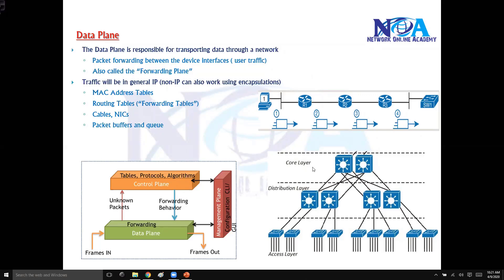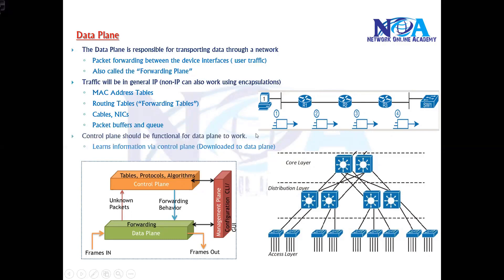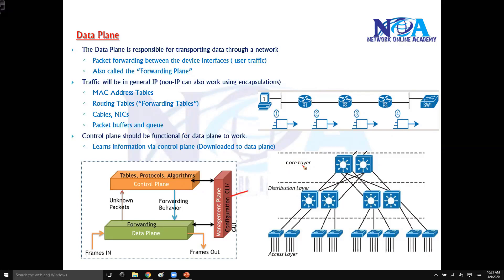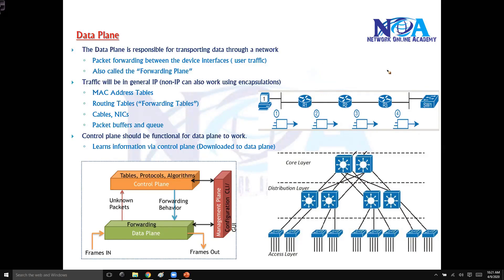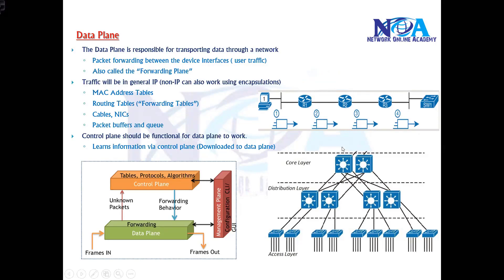For the data plane to work, the control plane must be functioning. The control plane is responsible for building the routing table or database. When you configure a routing protocol, the route is installed in the routing table by the control plane. The data plane then uses that information to forward the packets.